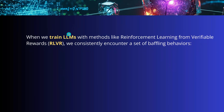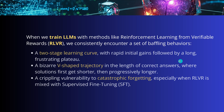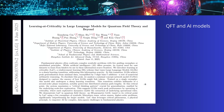Whenever we train an LLM with reinforcement learning using verifiable rewards, we have three problems. We have a two-stage learning curve, we have a V-shaped trajectory, and we encounter catastrophic forgetting if we do supervised fine-tuning.